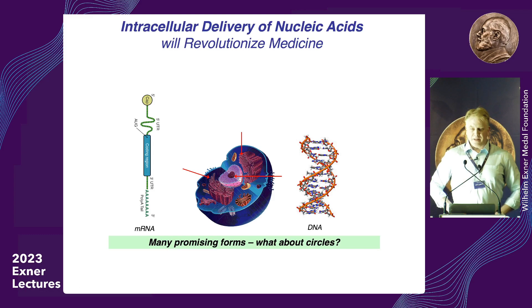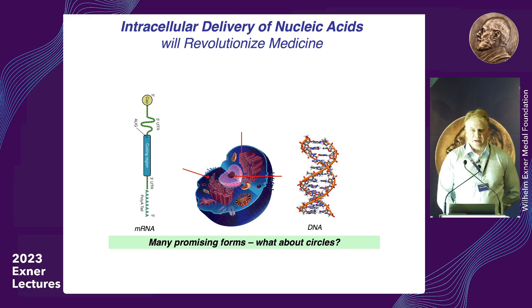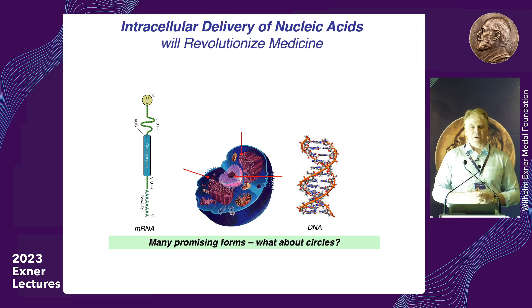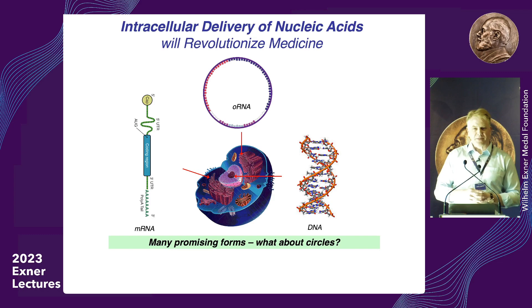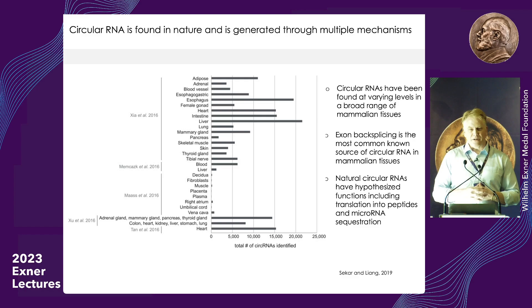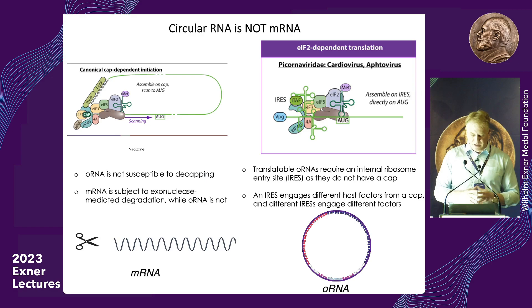I want to describe a new type of RNA we call circular RNA, or oRNA. For biologists, messenger RNA is essentially a line. However, in our bodies there are actually a lot of these circular RNA molecules, though it's not completely clear what they all do. They are present in many tissues, particularly in the brain. Interestingly, circular RNAs are able to encode for proteins but have fundamental differences from messenger RNA that give them potential advantages.